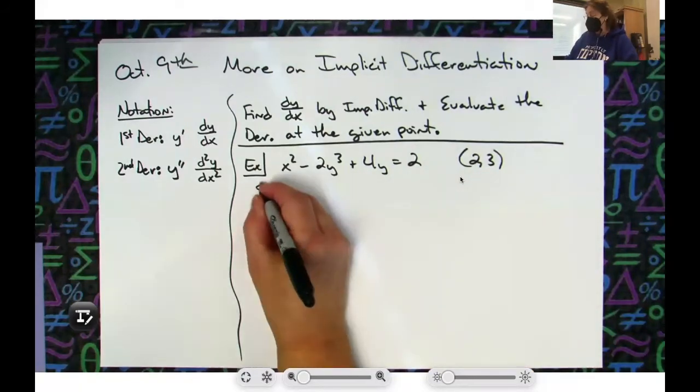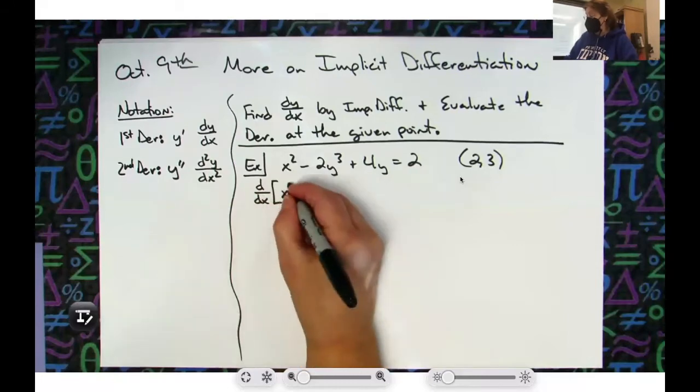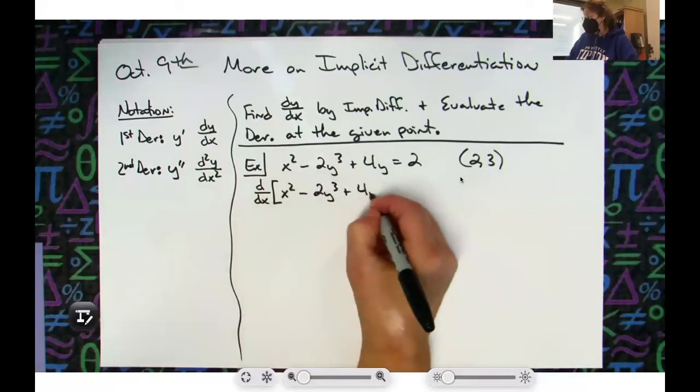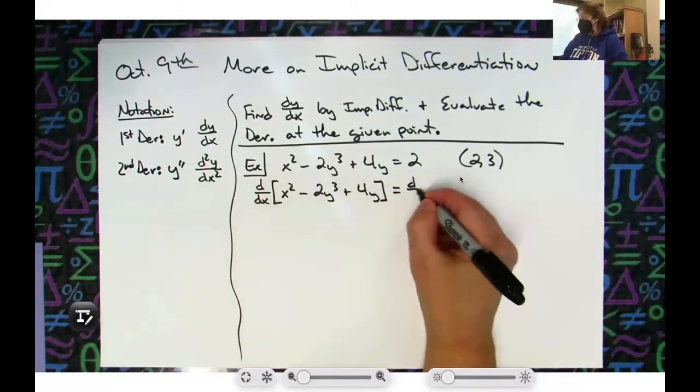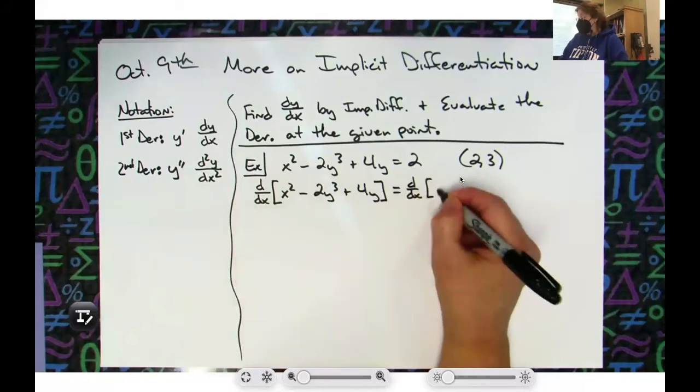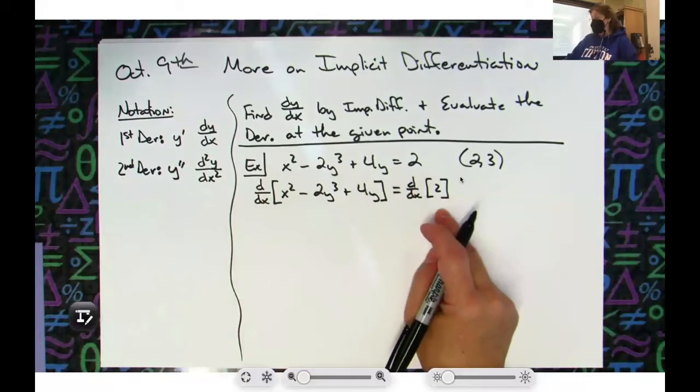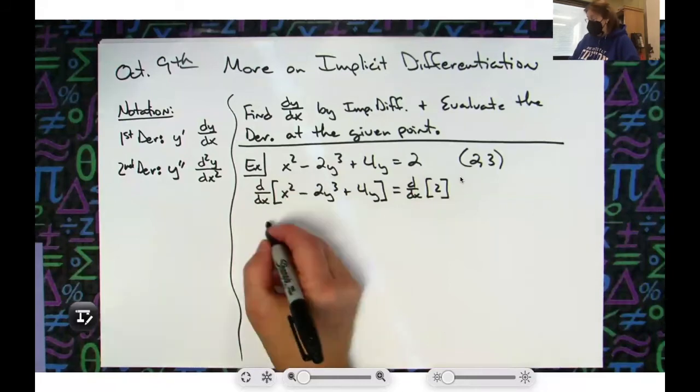So we're going to use our notation that we did yesterday. d/dx of this left-hand side - and again I will say yes, you're going to say that this is just writing a whole lot of work, but whoever's looking at your work needs to realize that this was the original problem and then this line you're telling them hey I'm going to start doing my derivative. If it's an x term we just do it like normal, so that x squared is just a 2x.